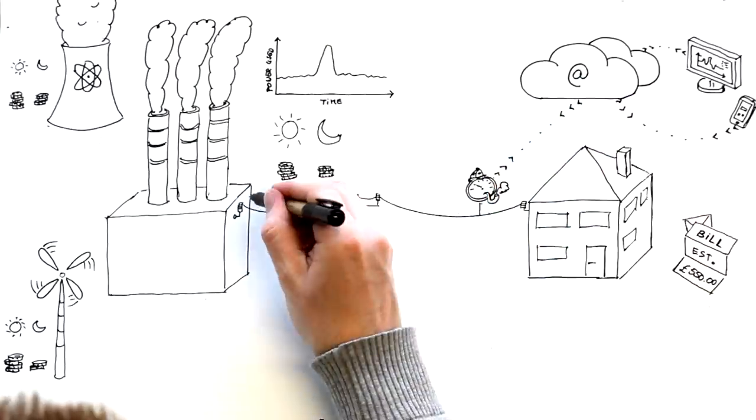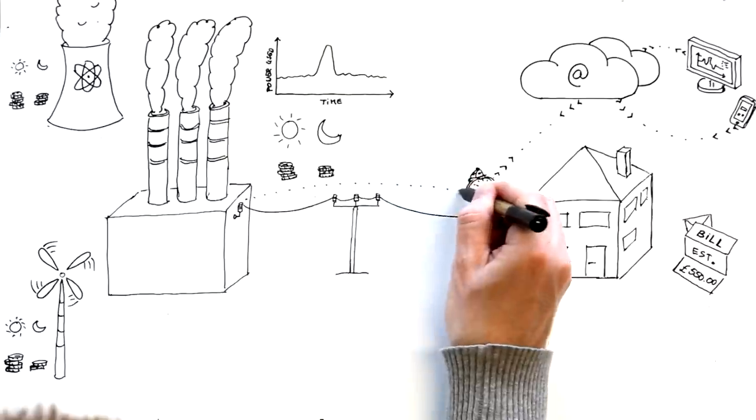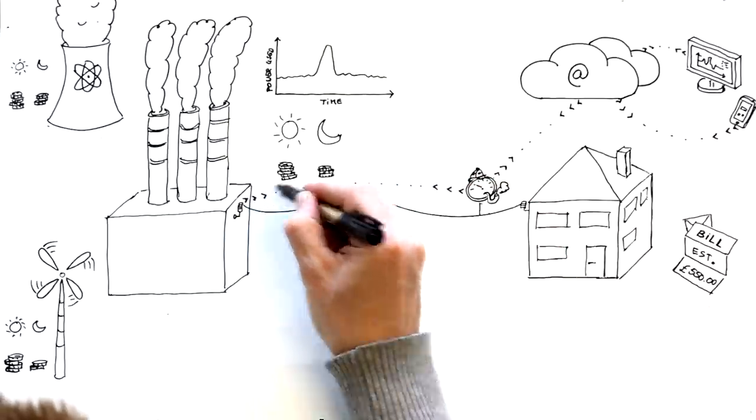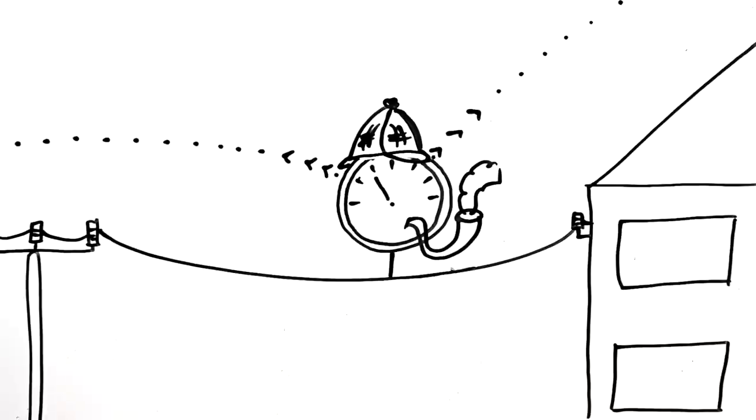Once installed in your home, the meter will also send electricity usage data to your power company every 30 minutes. This means the power company will know exactly how much energy is being used all of the time.